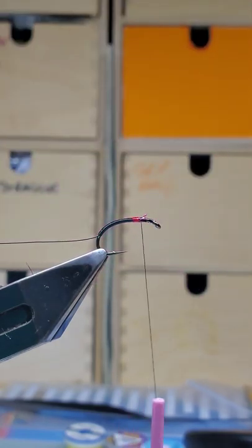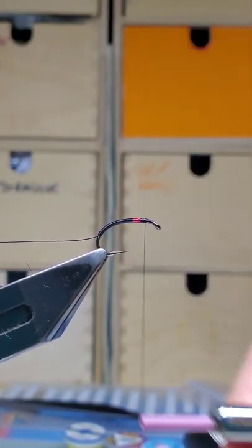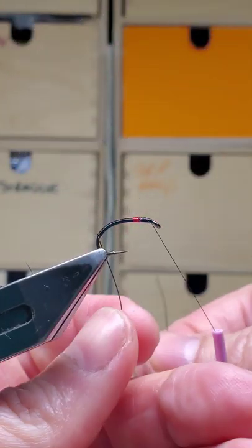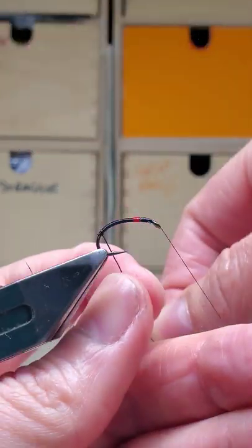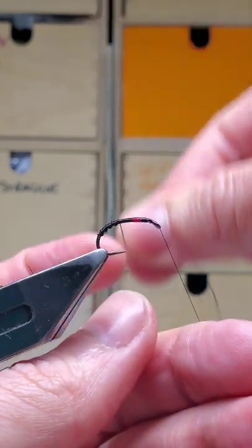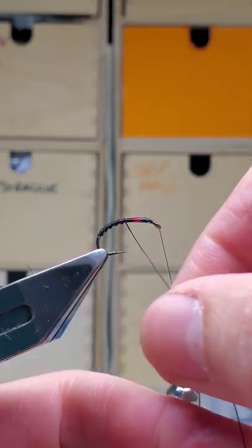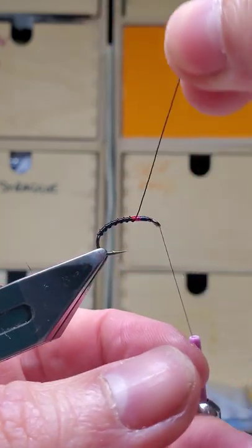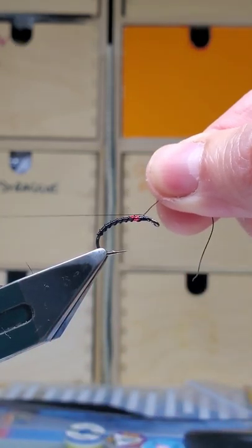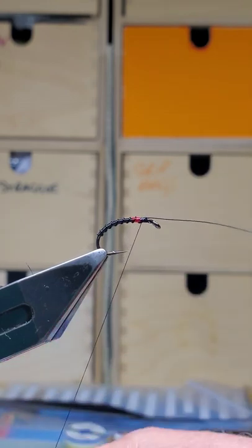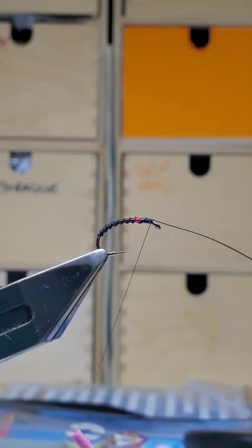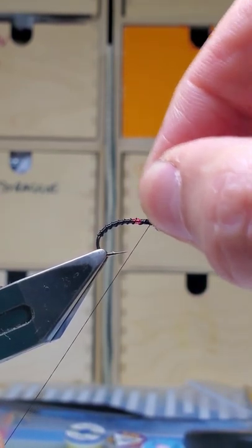Trim away your waste. Just tidy everything up. Take your wire, just rib that up the body. Single turn over the hot spot. Bend your wire, tighten everything up, put everything tight and just reel on the way.